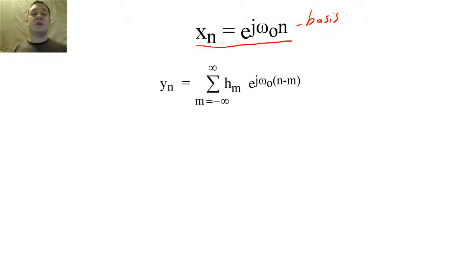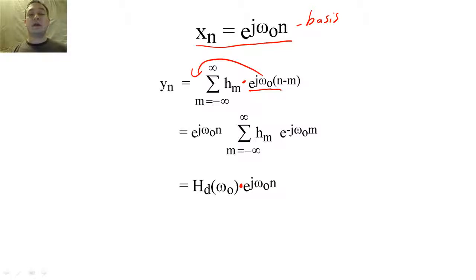So if we input a periodic basis function into a filter, the convolution of the two signals will look like this. We can pull an e to the j omega n out of the summation to find that Y of n will simply equal X of n scaled by the DTFT evaluated at omega nought.